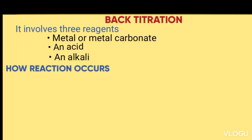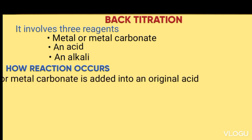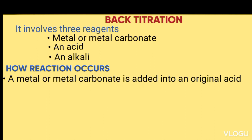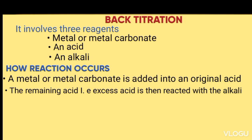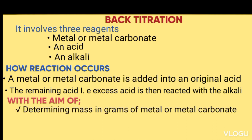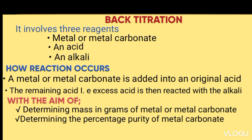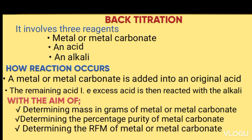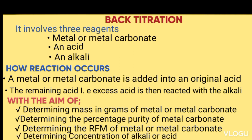The reaction occurs as follows. The metal or metal carbonate is added into an original acid, and then the remaining acid — called excess acid — is then reacted with the alkali. The aims include: determining the mass in grams of the metal or metal carbonate, determining the percentage purity of the metal carbonate, determining the relative formula mass of the metal or metal carbonate, and determining the concentration of the acid or alkali.